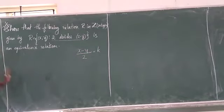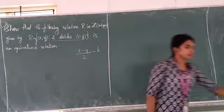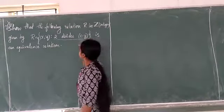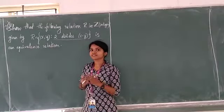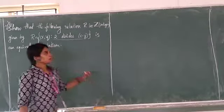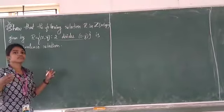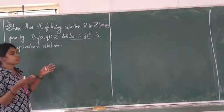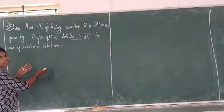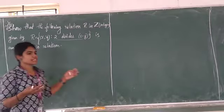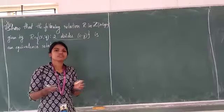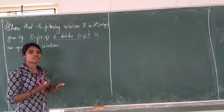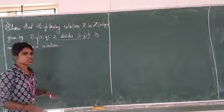This question is very important for three marks and has been repeated many times. We have to show it is an equivalence relation. Since Z is an infinite set, we cannot write out all elements to check. So we have to go in general.